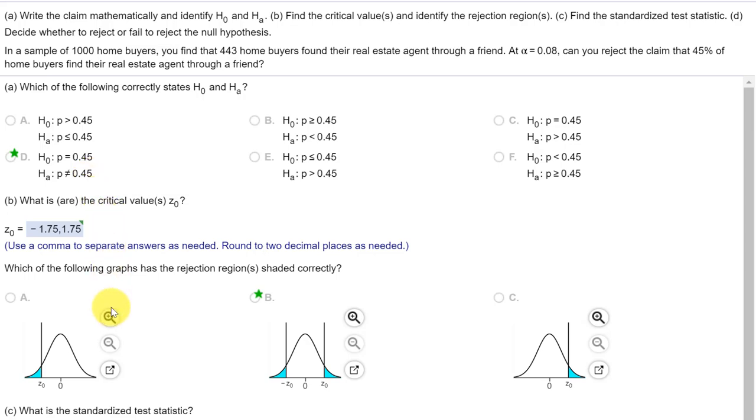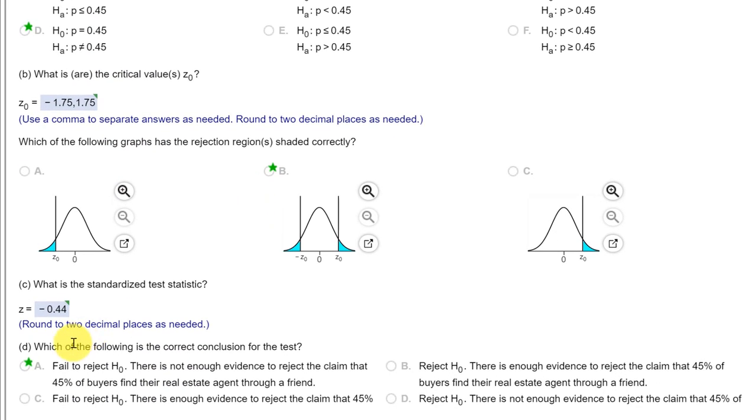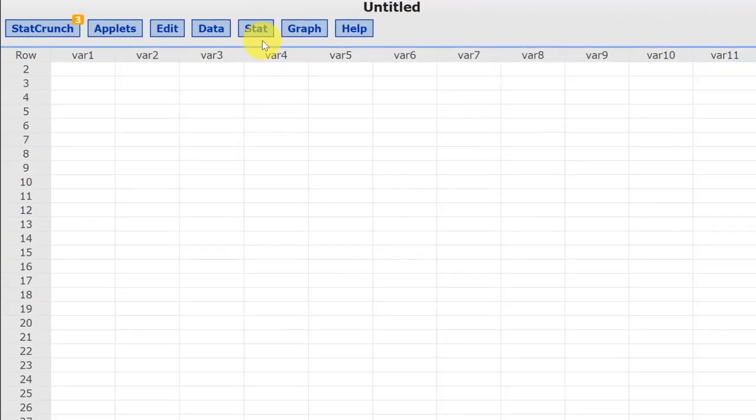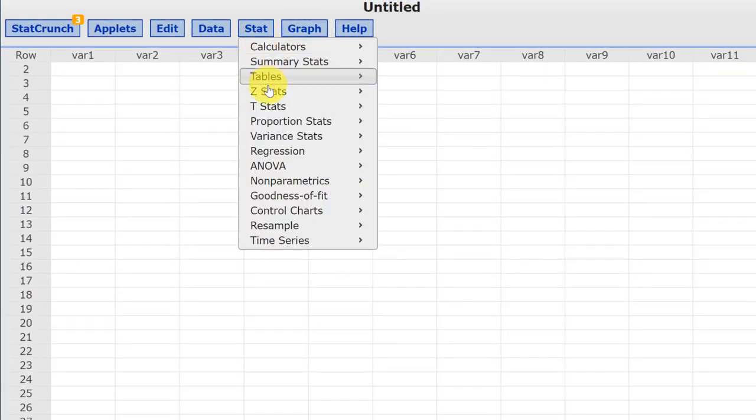We need to find the critical values, we need to get a sketch, and we need to get the standardized test statistic and then make a decision. So we're going to do this using StatCrunch. Over here I've got StatCrunch up. We're going to click on Stat and then we go down. Although we always use the z distribution, the z test for proportions, StatCrunch has a special z test for proportions and it's found under the proportion stats option, one sample with summary.